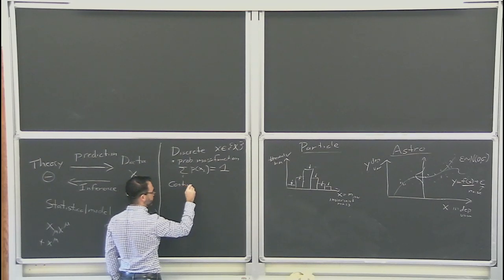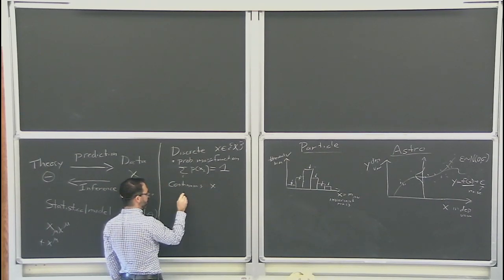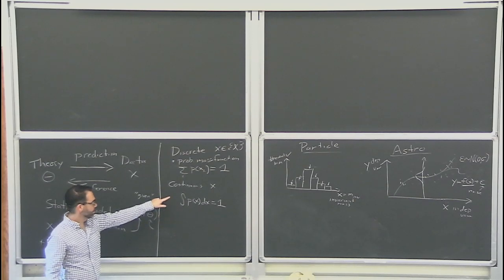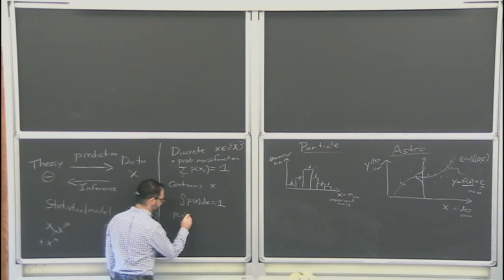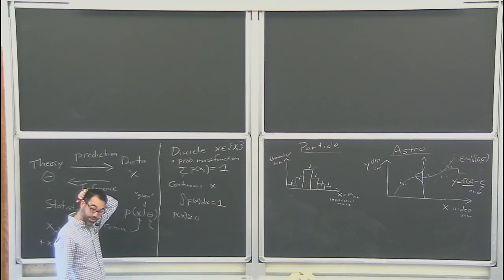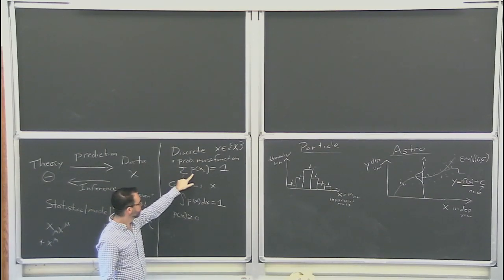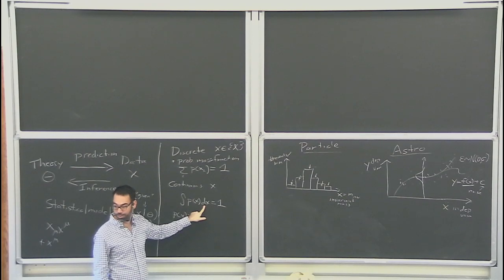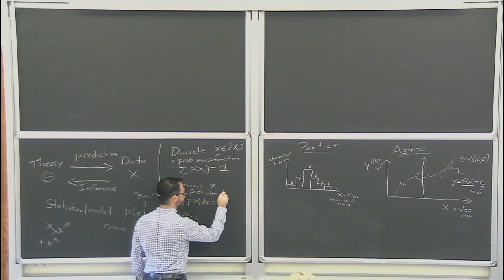If it's continuous, then the integral of P of X dX should equal one. You also have that P of X should be greater than or equal to zero for both cases — you can't have negative probabilities. The units of P of X in the continuous case are one over whatever the units of X are, making it a probability density function. It's okay for P of X to be bigger than one, because it's a probability density — what you need is that when you integrate over everything, it sums up to one.